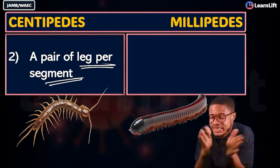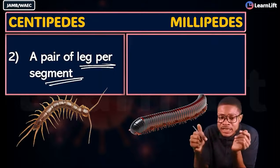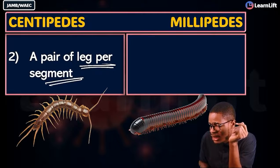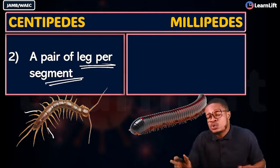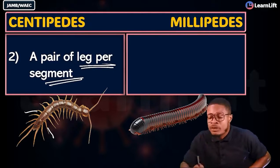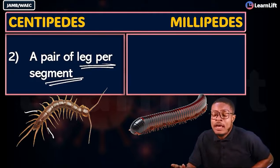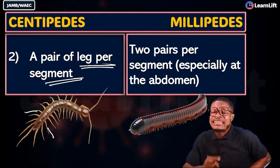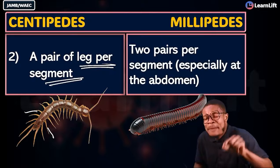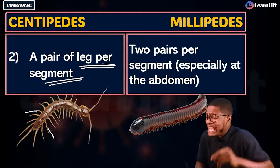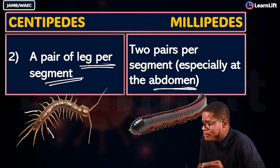The second difference: centipedes have one pair of legs per body segment — meaning two legs per segment. Millipedes are different: they have two pairs of legs per body segment, especially in their abdomen region.